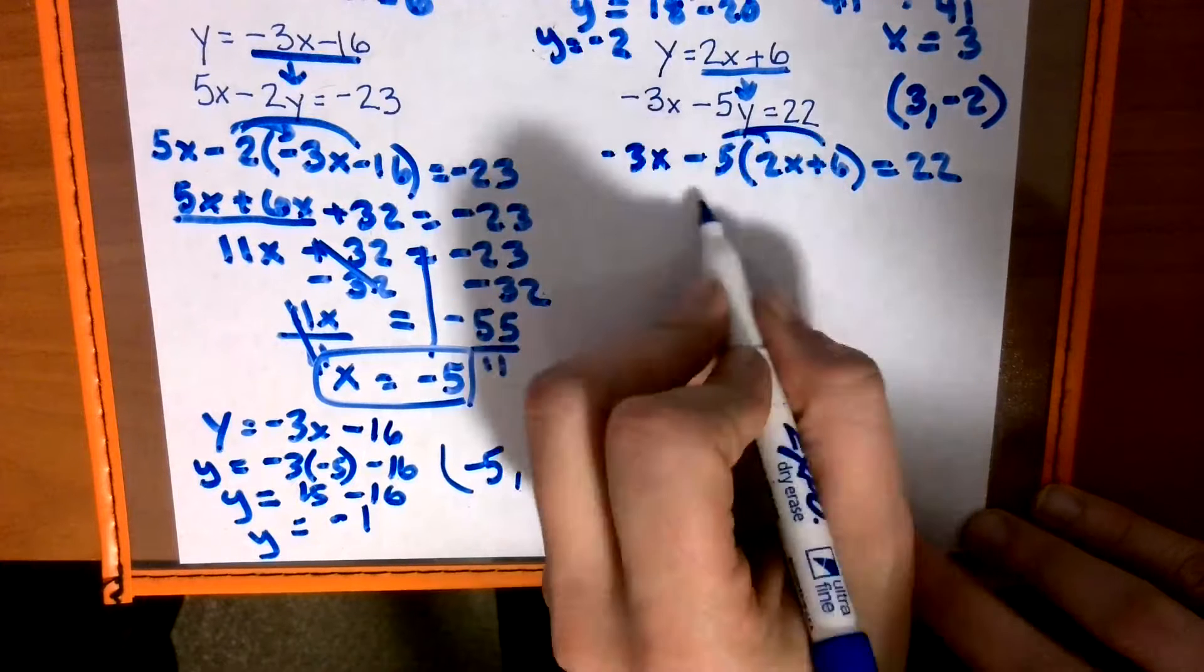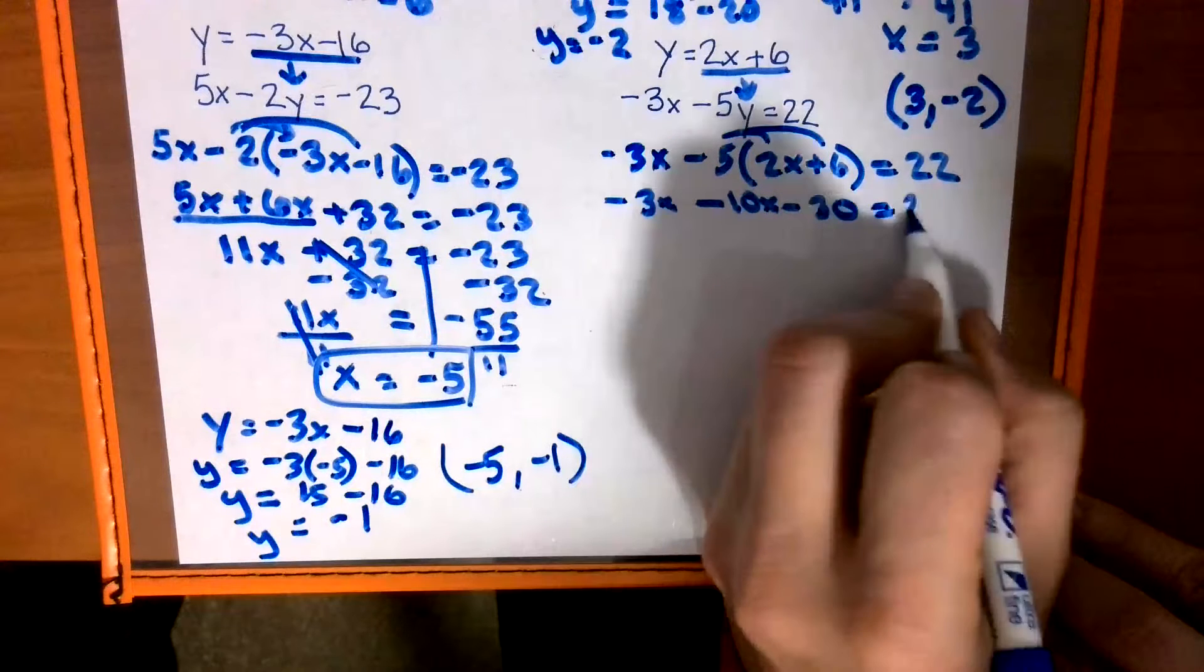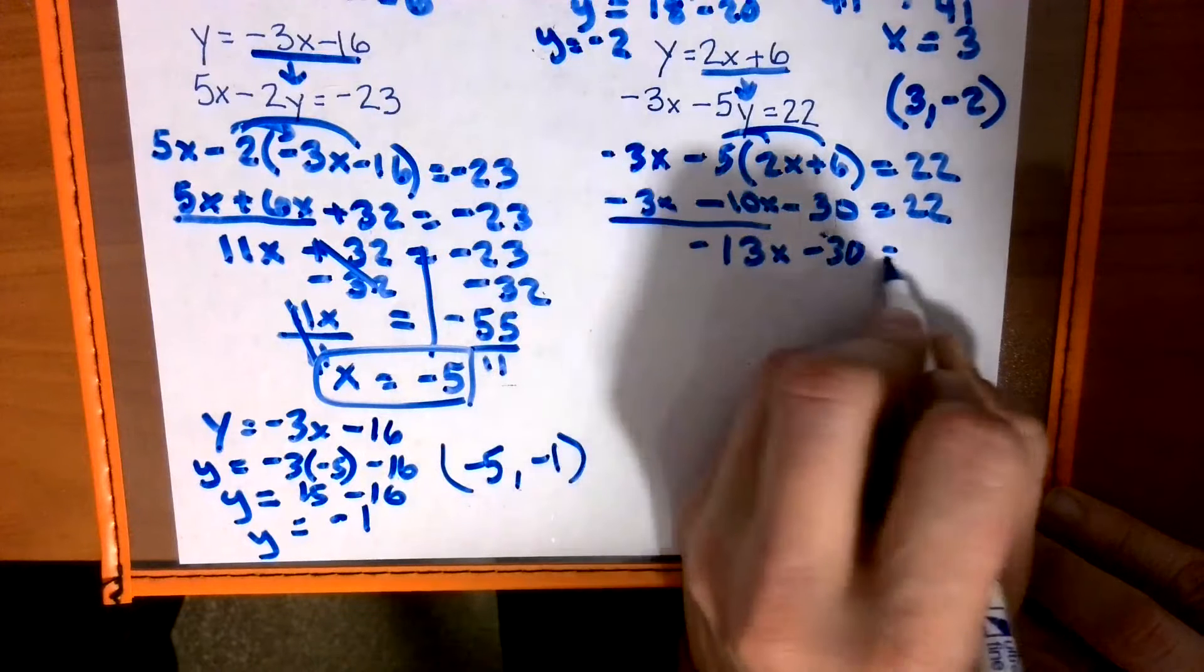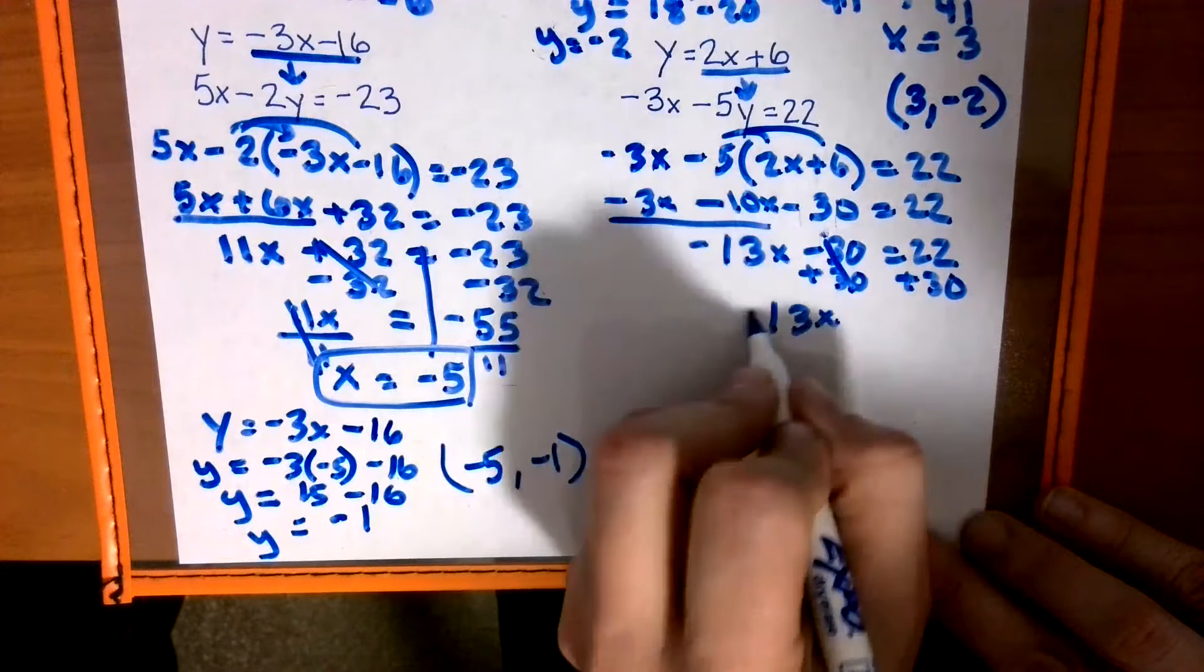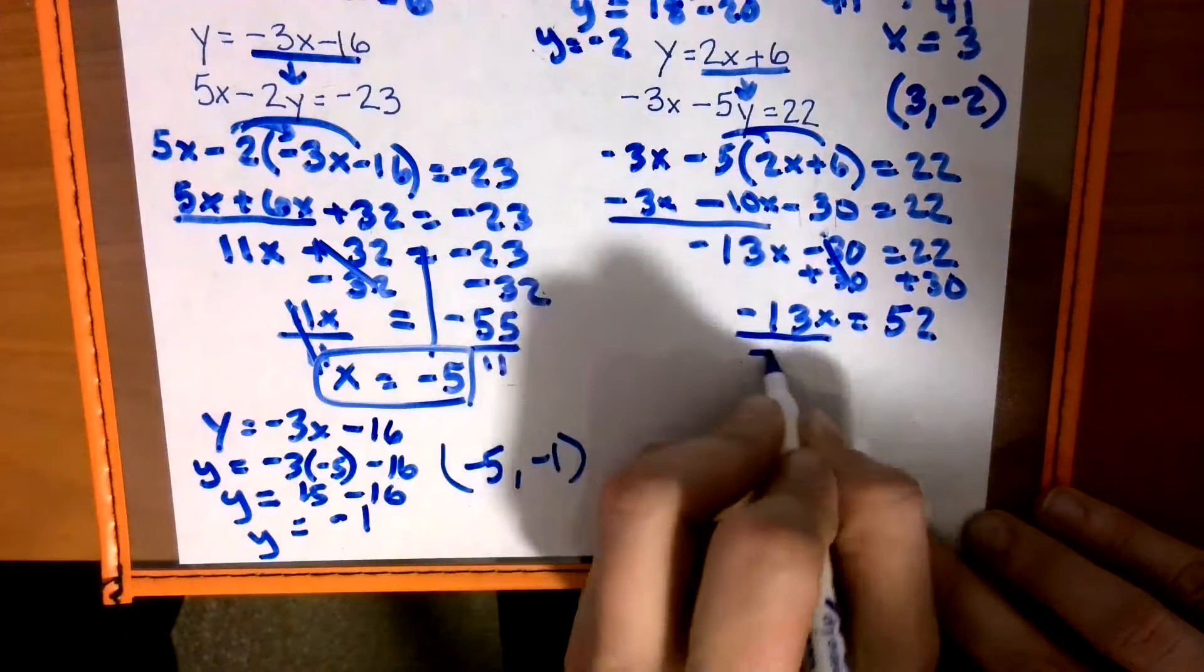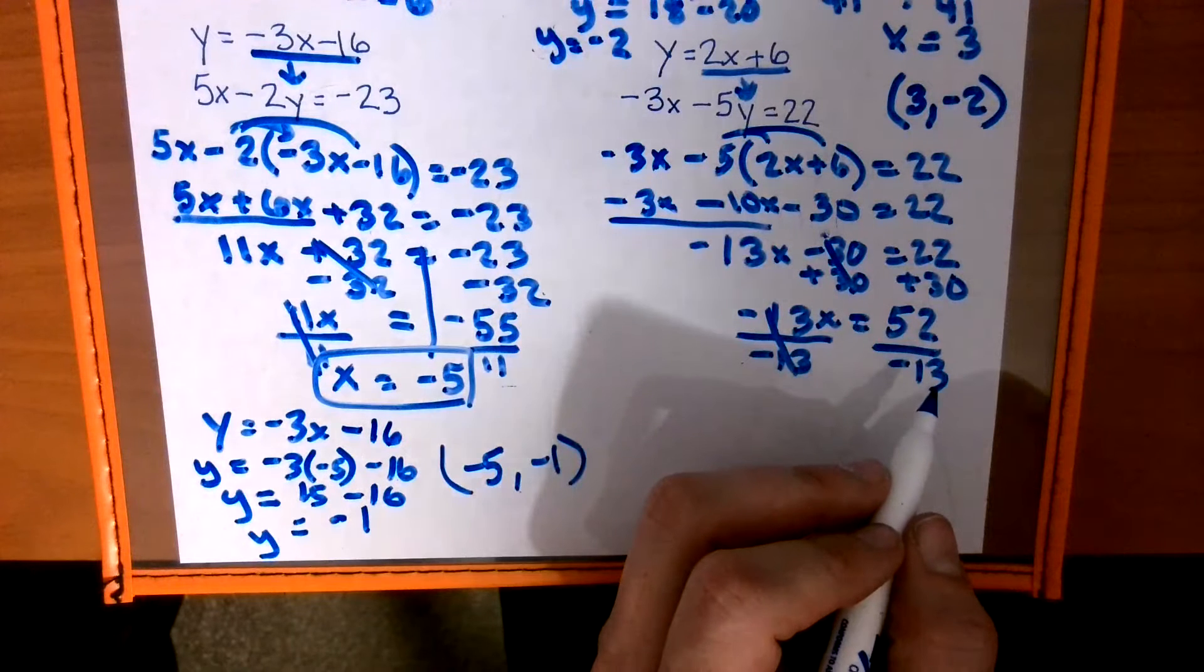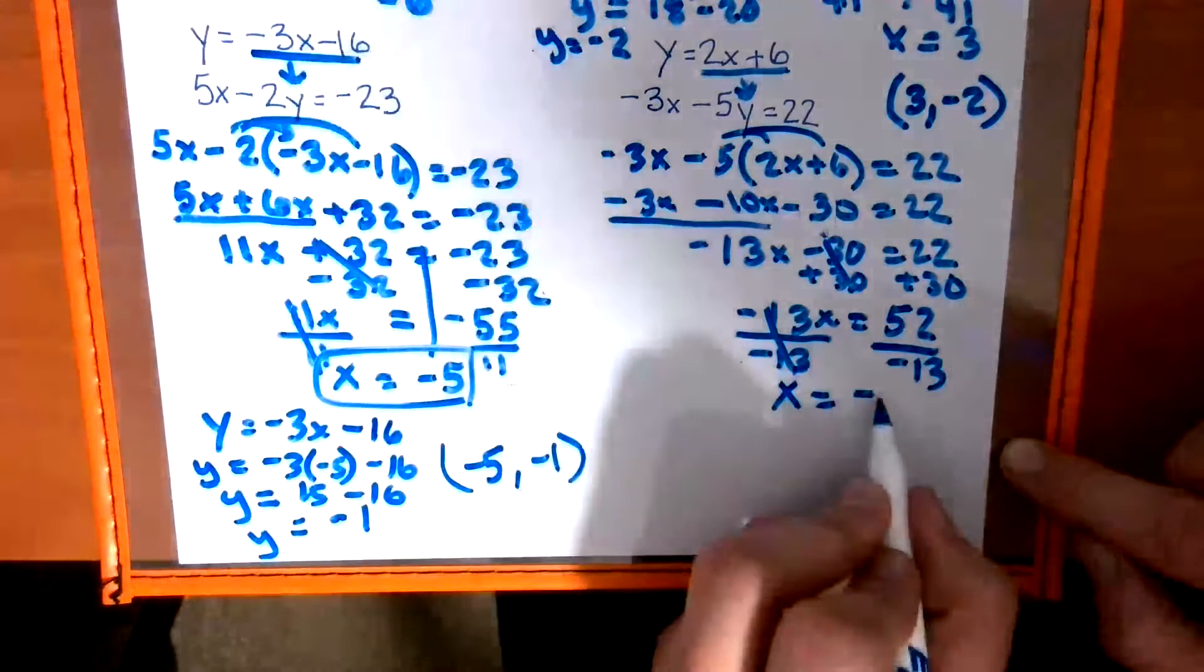Distribute. Negative 3x minus 10x minus 30 equals 22. That's a bad looking 3. There we go. Together that makes negative 13x minus 30 equals 22.